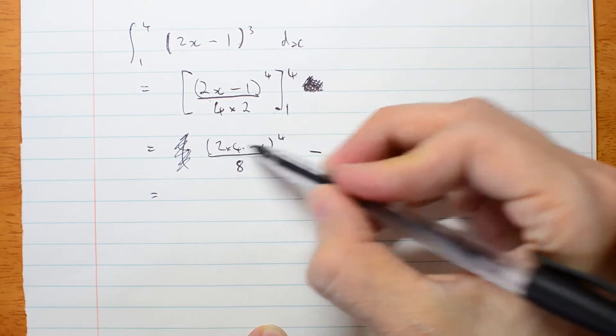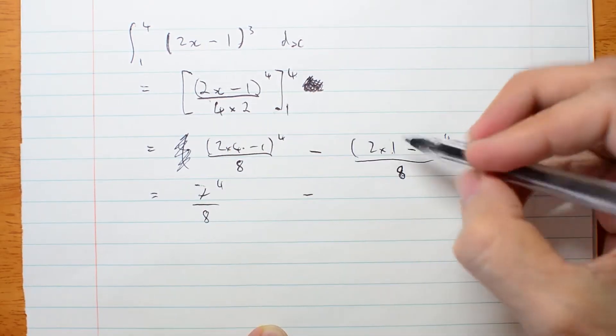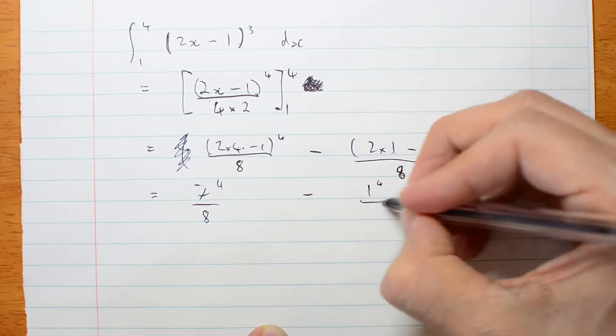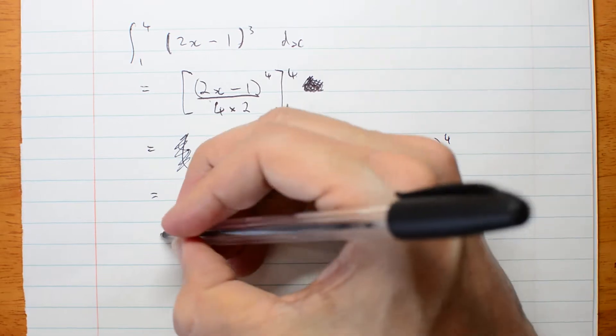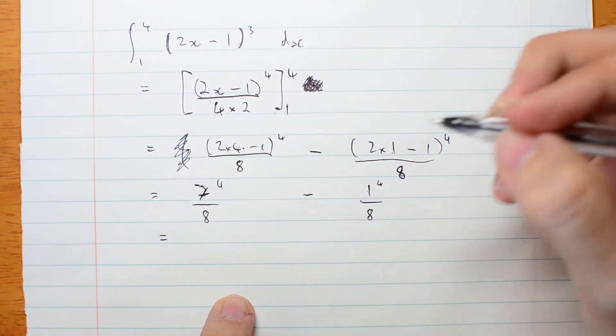Now, 8 take 1 is 7 to the 4, minus 2 take 1 is 1 to the 4. I actually don't think it's that bad written like that.